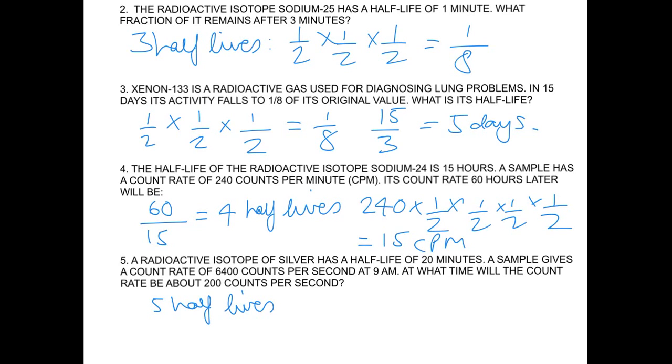So I times 6,400 by a half five times, and I got to 200. That means 5 half-lives have occurred, and each half-life took 20 minutes, so therefore 5 half-lives takes 100 minutes. So all you need to do now is work out what 100 minutes past 9 o'clock is, and remember there's 60 minutes an hour, so that brings us up to 10:40.